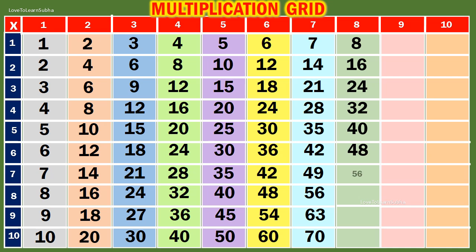8 7s are 56. 8 8s are 64. 8 9s are 72. 8 10s are 80.